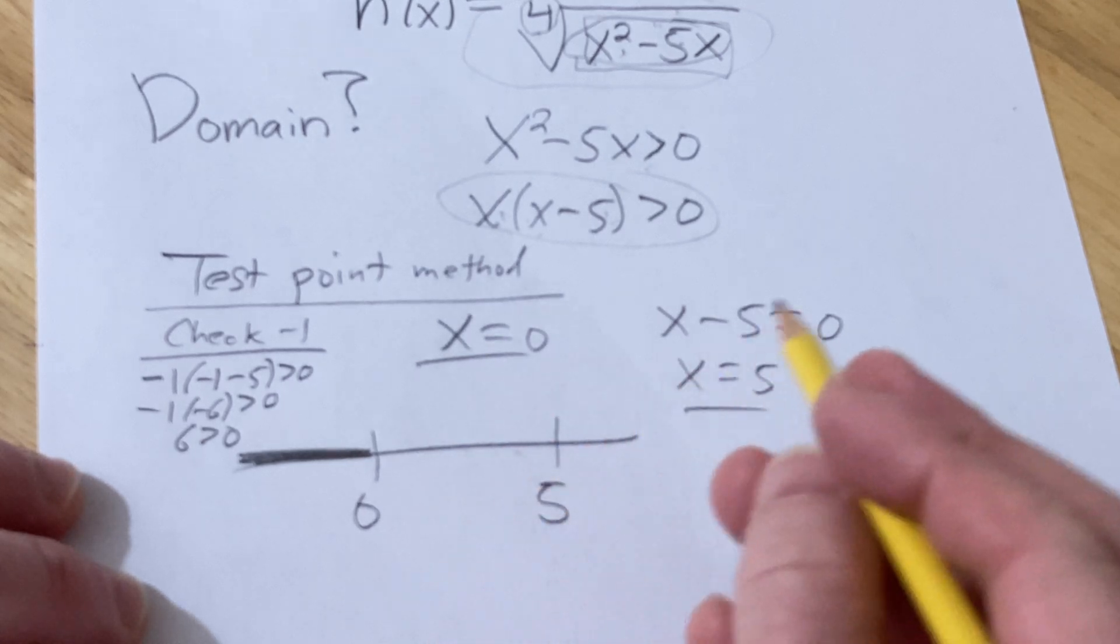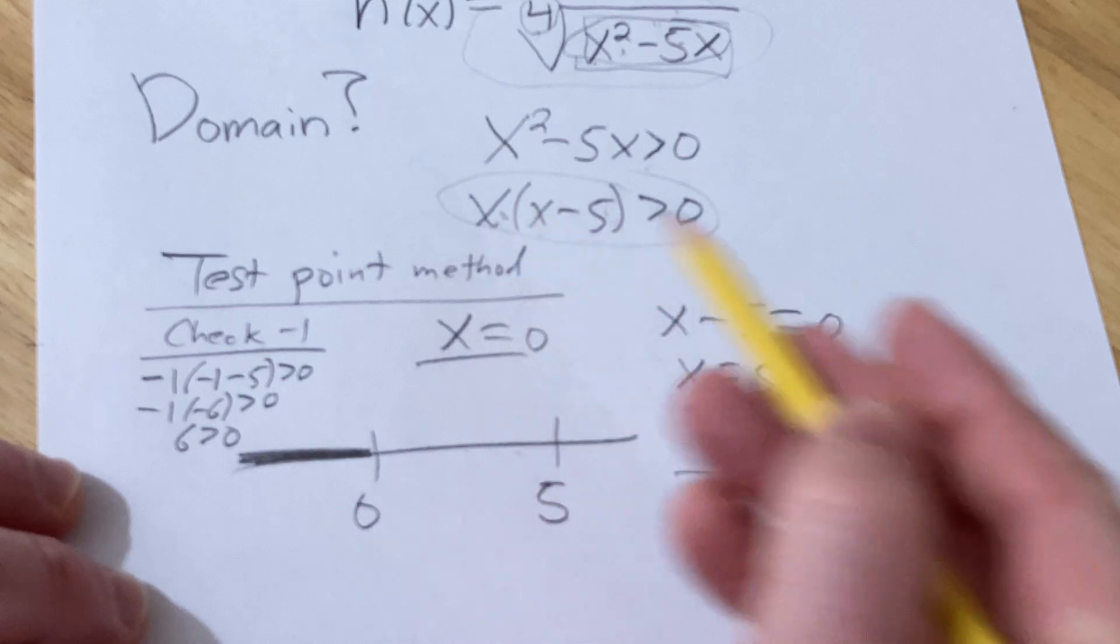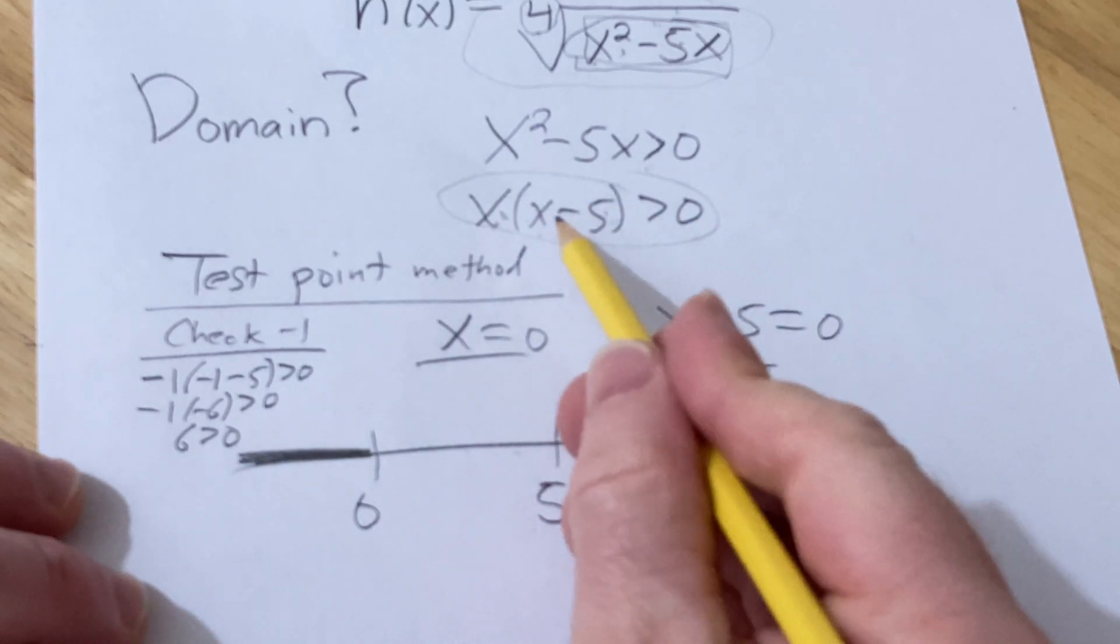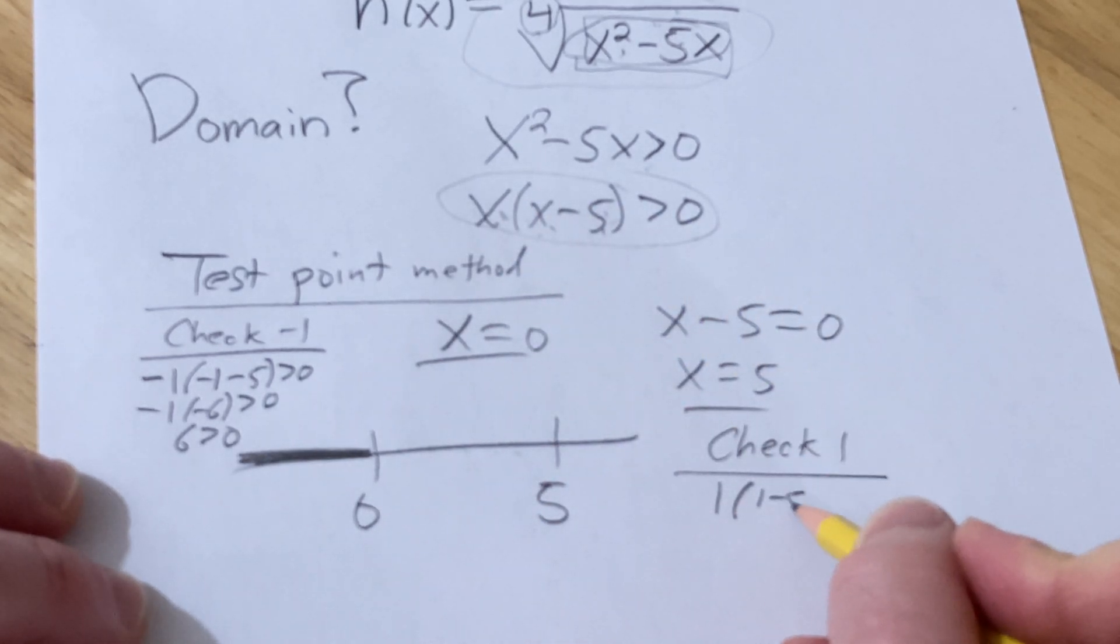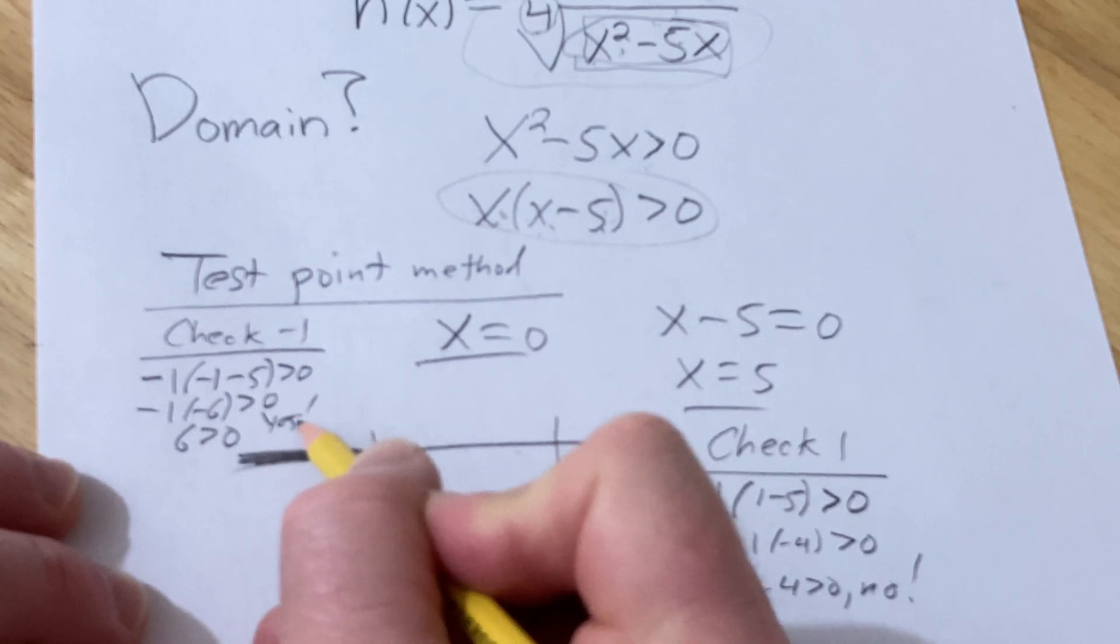Let's check one, a number between zero and five. Plugging in one, we get one times (one minus five), which we want to be greater than zero. That's one times negative four. Negative four greater than zero? No, it's not true, so we don't shade. The previous test was true, so we shade there.